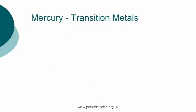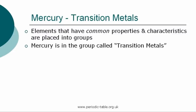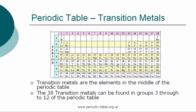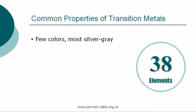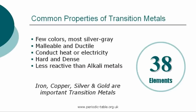Once the properties of an individual element have been identified, it is placed into a group of elements which have common properties and characteristics. Mercury is in the group called the transition metals. The 38 elements classified as transition metals are found in the middle of the periodic table in groups 3 through 12. Only a few of the transition metals are colored; most of them are silver-gray or silver-bluish. As with all metals, the transition elements are ductile and malleable and good conductors of electricity and heat. They are generally hard and dense, and less reactive than the alkali metals.